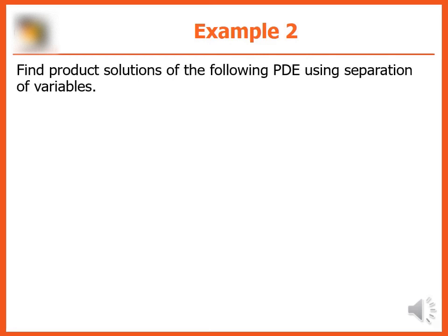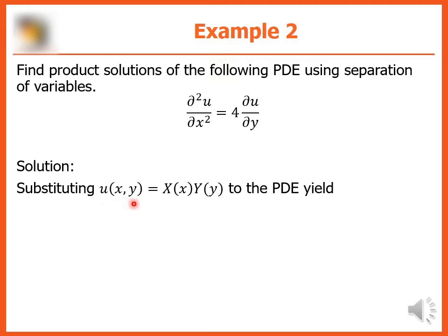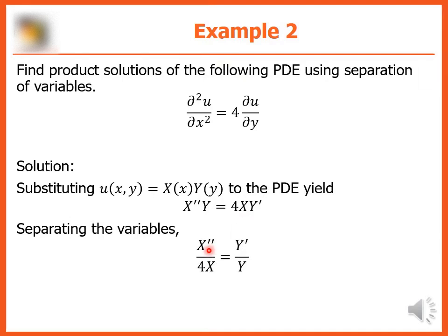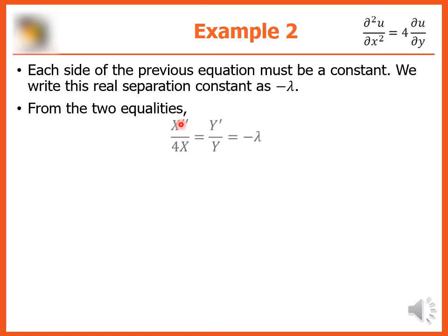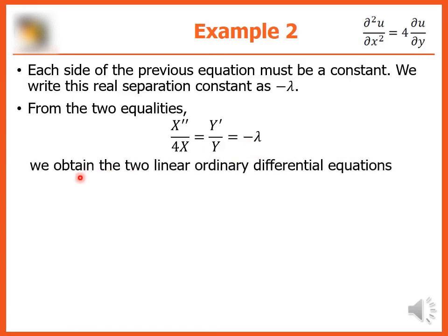Example 2: find product solutions of the following PDE using separation of variables. Substituting u(x,y) = XY into the PDE yields X″Y = 4XY′. Separating the variables: X″/(4X) = Y′/Y. Each side must equal a constant, written as negative lambda, giving two ODEs: X″ + 4λX = 0, and Y′ + λY = 0.